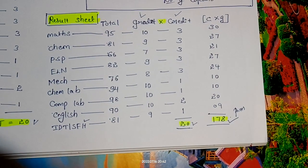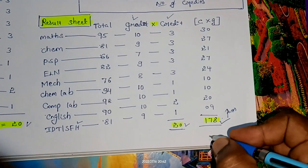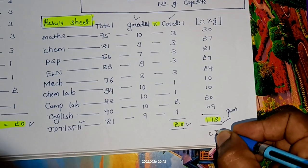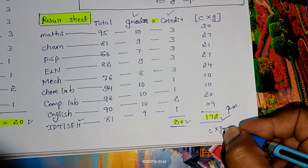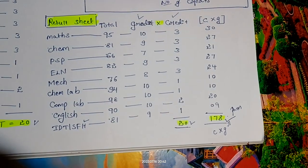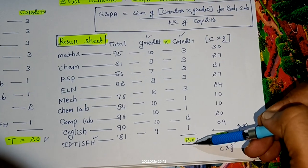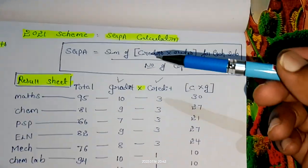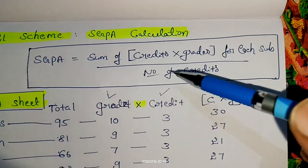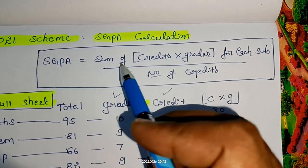Totally, how many points did I get? 178. This 178 is nothing but C multiplied by G. I will call this as points.